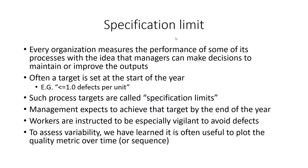Every organization measures something, some of their processes, to give managers a way to monitor or improve the outputs. Very often there is a target set, such as less than one defect per unit. Those targets are external targets set by management or by customers, but not by the process itself. Such targets are called specification limits.